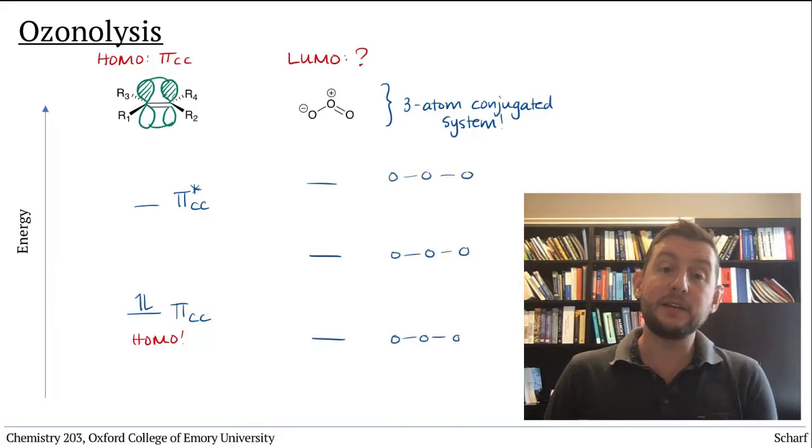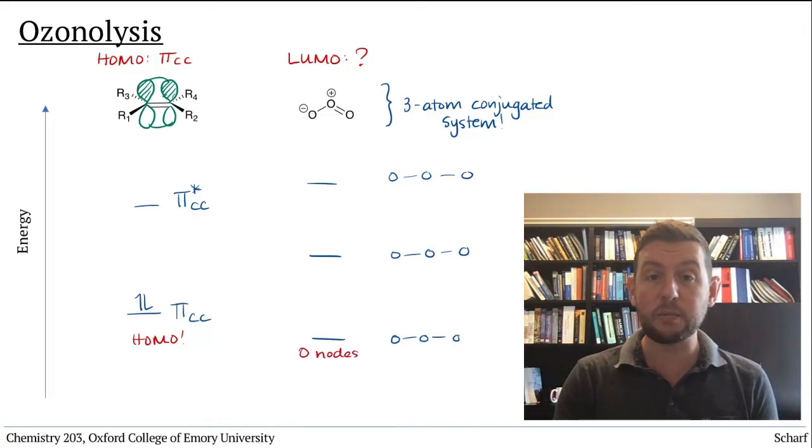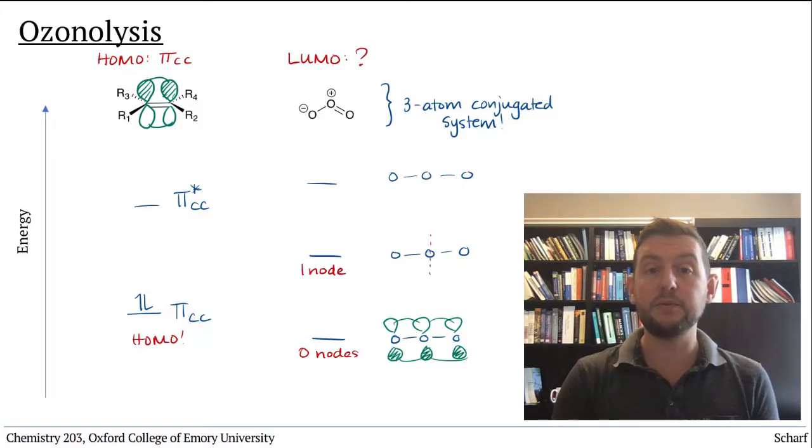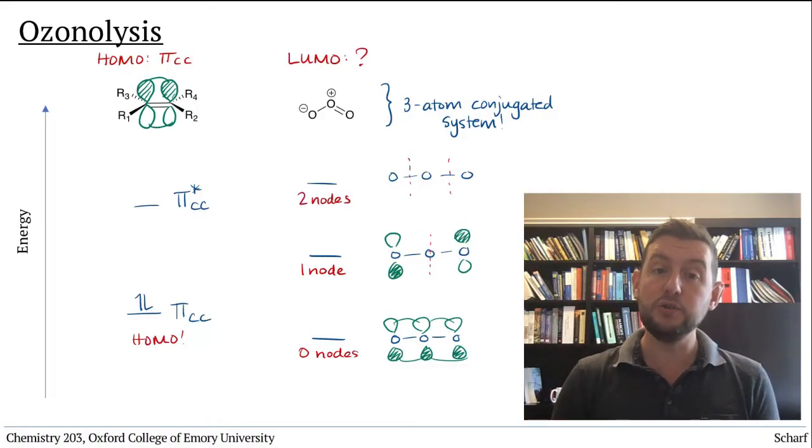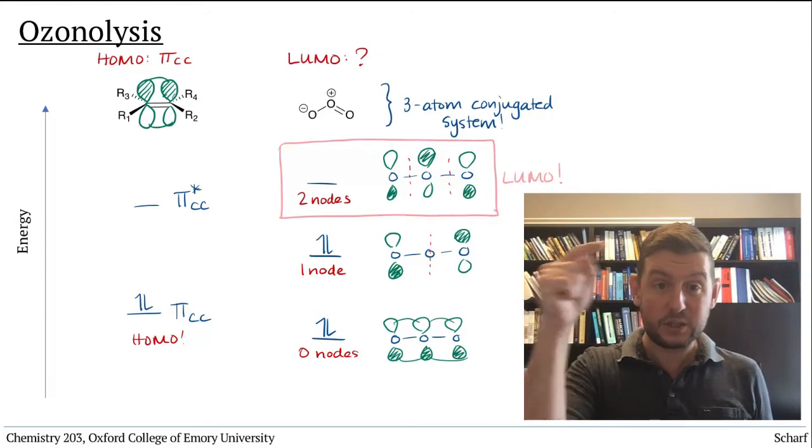The pi molecular orbitals of ozone are these. The lowest energy orbital has zero nodes. The next orbital has one node right through the central oxygen atom. And the highest energy orbital has two nodes between the oxygen atoms. There are four electrons in this pi system, so the LUMO of ozone is this one.